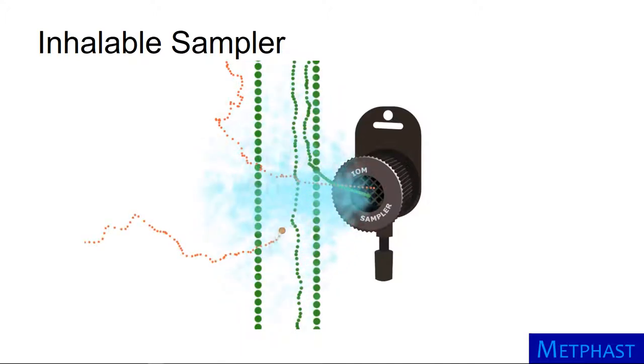Smaller particles are aspirated with increasing efficiency as they are more easily carried by the airflow into the sampler. The inlet and airflow of an inhalable sampler is carefully designed to match the inhalable size selective criterion.